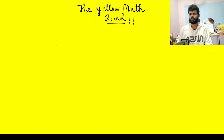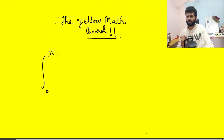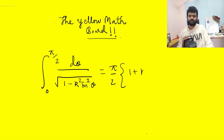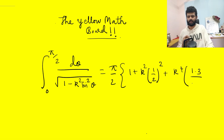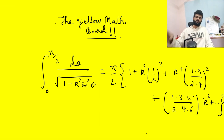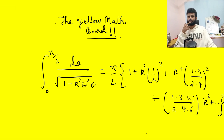The integral is: the integral from 0 to π/2 of dθ divided by the square root of (1 − k² sin²θ). This equals π/2 times the series: 1 + (1/2)² k² + (1·3)/(2·4) whole squared times k⁴ + (1·3·5)/(2·4·6) whole squared times k⁶, and so on. We'll try to prove this.